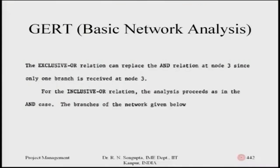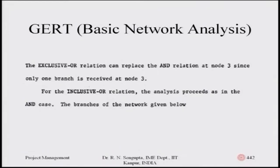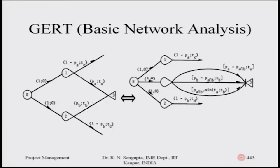Continuing with GERT basic network analysis — the exclusive OR relationship can replace the AND relationship at node three. If you refer to the slides for the thirty-eighth session you will understand what I mean, since only one branch is received at node three. If you remember the three combinations of input and two combinations of output, that led to the GERT general detailed discussion.